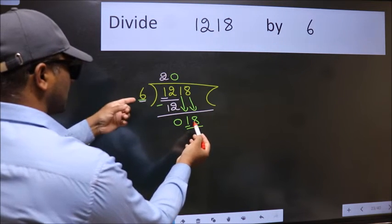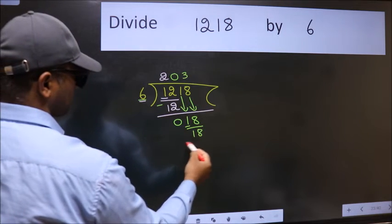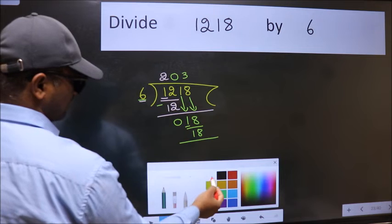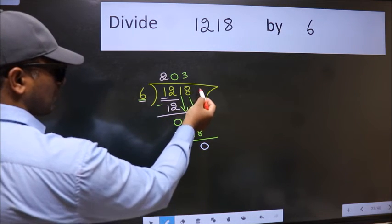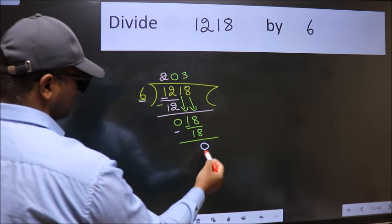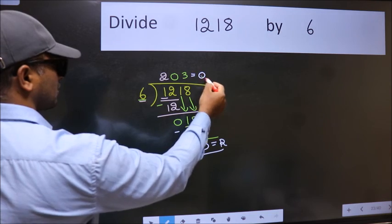When do we get 18 in 6 table? 6 threes, 18. Now we subtract. We get 0. No more numbers to bring it down. So we stop here. This is our remainder and this is our quotient.